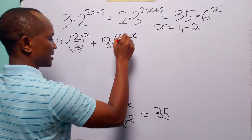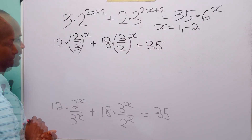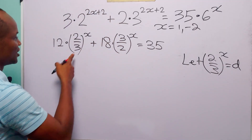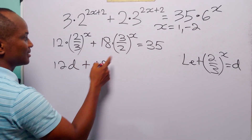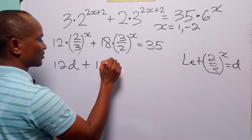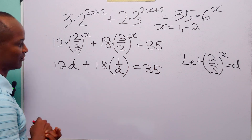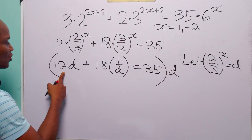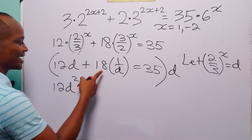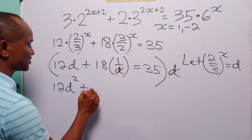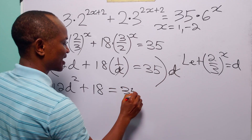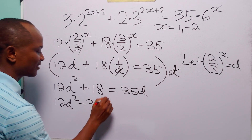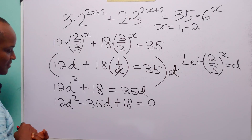We let d equal (2/3) to the power x. Since (3/2) to the power x is the reciprocal, we have 12d plus 18 times (1/d) equals 35. Multiplying through by d: 12d squared plus 18 equals 35d. Rearranging gives the quadratic 12d squared minus 35d plus 18 equals 0.